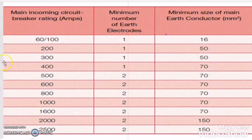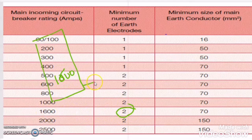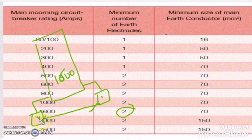Another thing I want to highlight: suppose my panel has a rating of 1600 ampere. From this chart we can say that two earth pits are required for this LV panel. The distance between these two earth pits should be at least 6 meters or above — it should not be less than 6 meters.